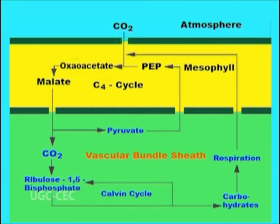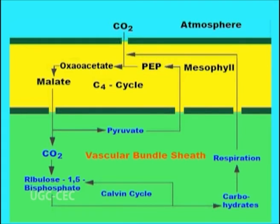Carbon dioxide is removed from malate, forming pyruvate, a 3-carbon compound. Pyruvate is then shuttled back to the mesophyll cells where it is converted to PEP or phosphoenolpyruvate, and this step requires ATP. Malate is transported into the bundle sheath cells, which is the site of carbon dioxide fixation by rubisco, where oxygen concentration is low to avoid photorespiration.